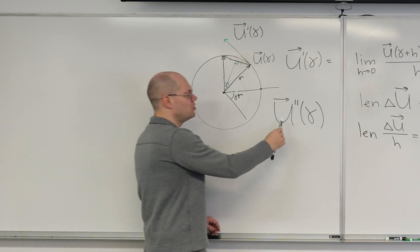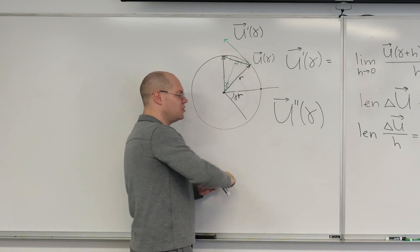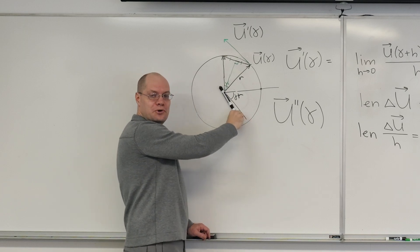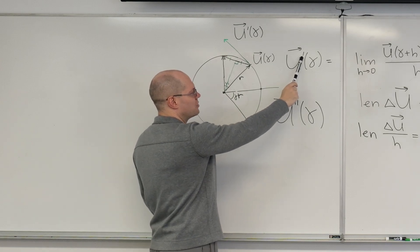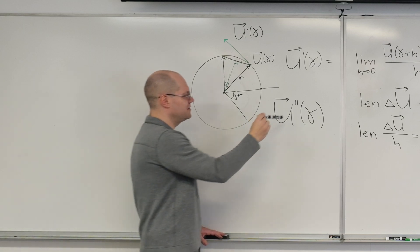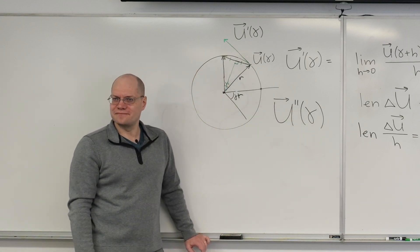And then the second derivative, U double prime, will be at the right angle to that, also in the counterclockwise direction. So, once again, pointing inwards. All right. So all of the odd order derivatives flip their direction and all of the even number derivatives preserve their direction. Isn't that interesting? That will come in handy in just a moment.